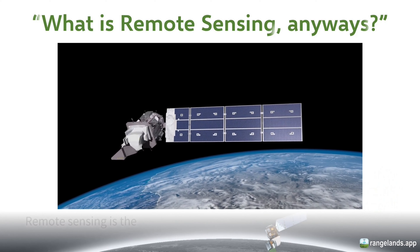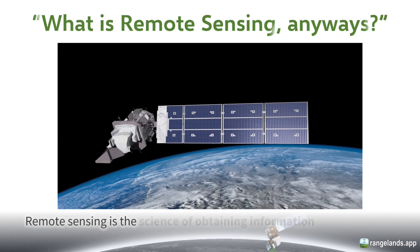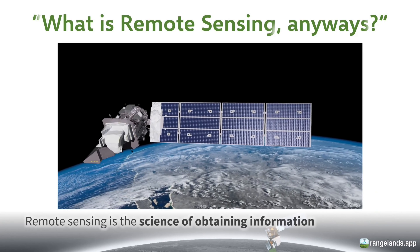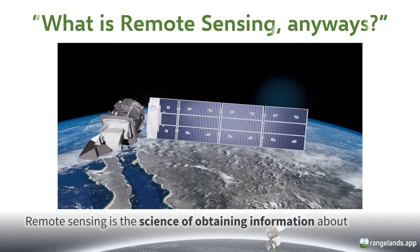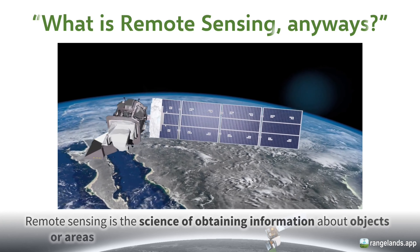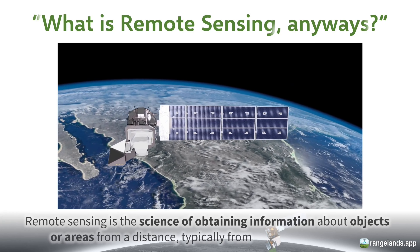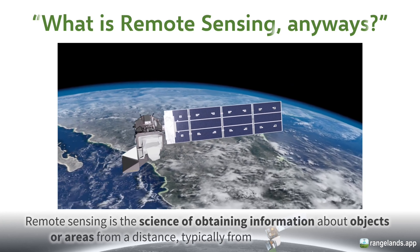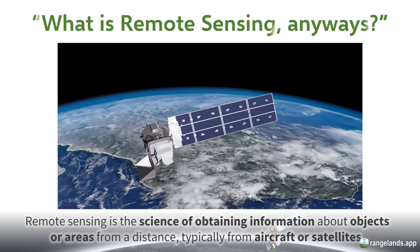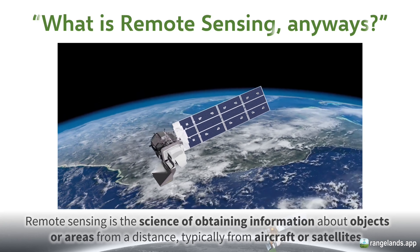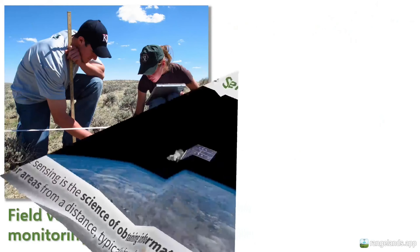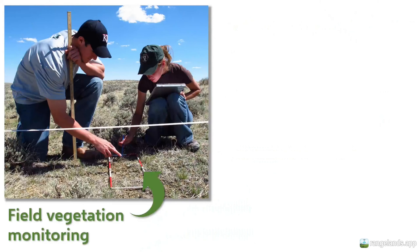The term remote sensing can be defined as the science of obtaining information about objects or areas from a distance, typically from aircraft or satellites. Essentially, remote sensing is just another way of measuring rangelands.